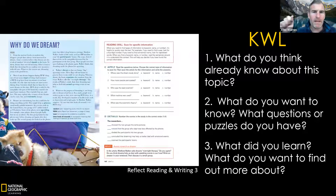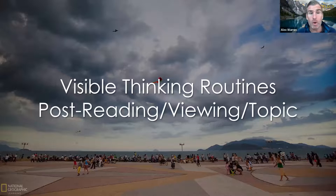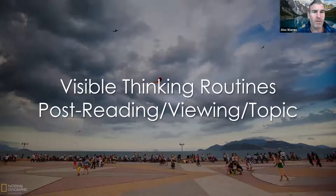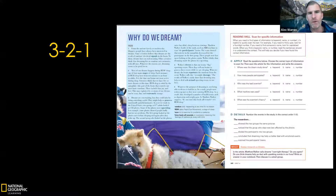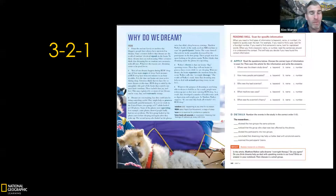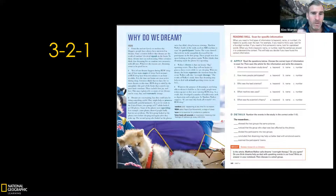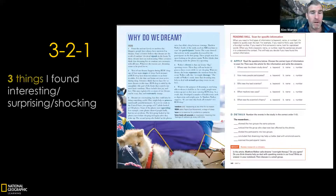Hopefully that article reinforced some things you already knew, or answered some of your pre-reading questions. Now let's look at visible thinking routines we can do post-reading, post-viewing. The first is called Three Two One — a routine that helps students reflect on what they've read, listened to, or watched on a deeper, more personal level. It's more reflective of what we do in real life: we don't read an article and answer comprehension questions, we reflect on it.